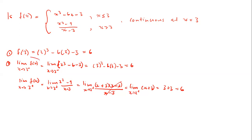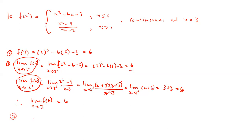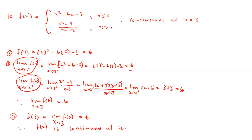Since the left-hand limit equals the right-hand limit (both equal 6), the general limit of f(x) as x approaches 3 is 6. Condition 3: f(3) = 6 equals the general limit = 6. All three conditions are satisfied, therefore f(x) is continuous at x = 3.